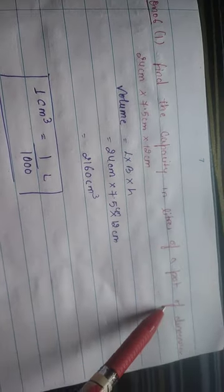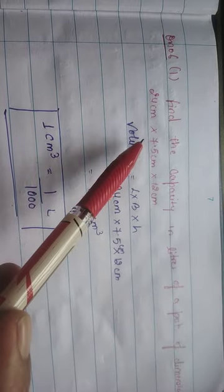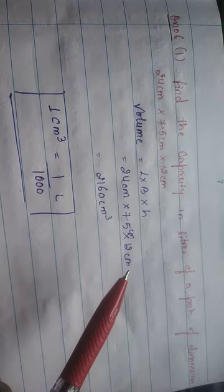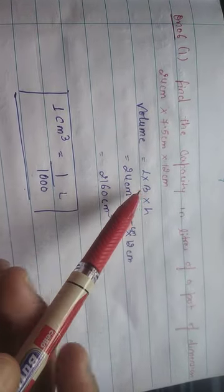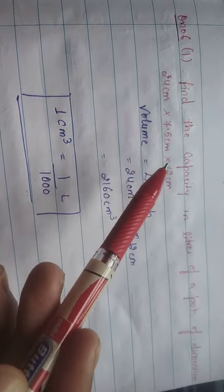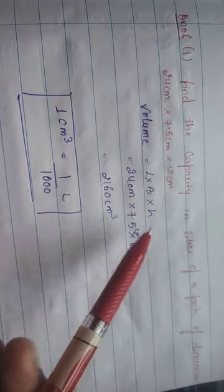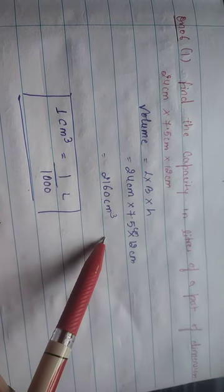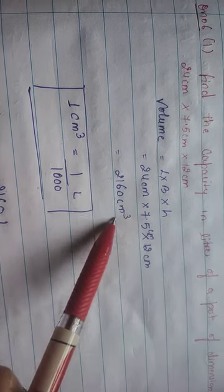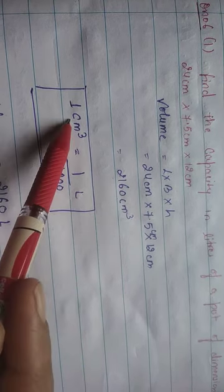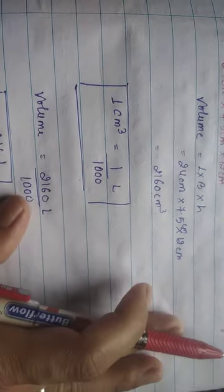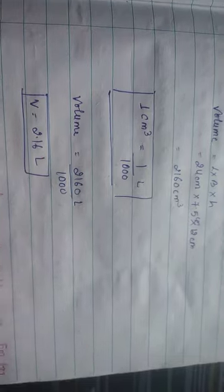Next question: Find the capacity in liters of a pot with dimensions 24 cm × 7.5 cm × 12 cm. Since three dimensions are given it is a cuboid. Volume = L × B × H = 2160 cm³. To convert to liters: 1 cm³ = 1/1000 liter. So we divide by 1000, giving volume = 2.16 liters.